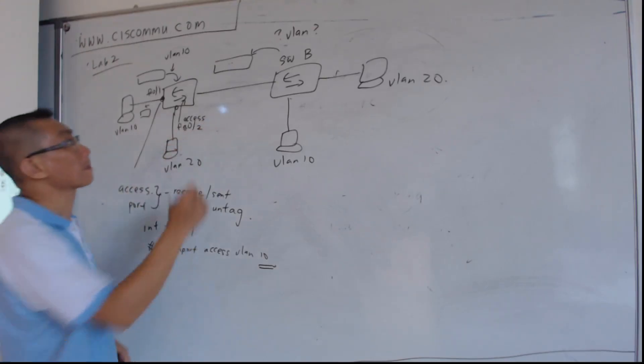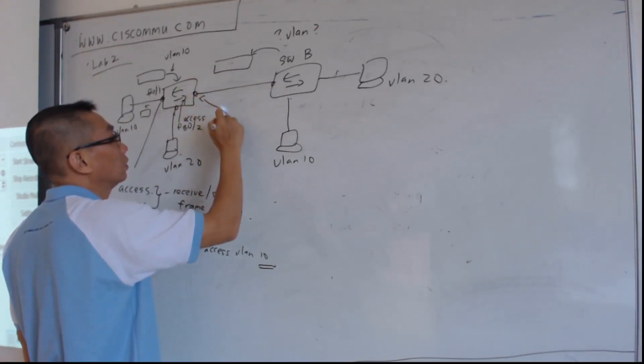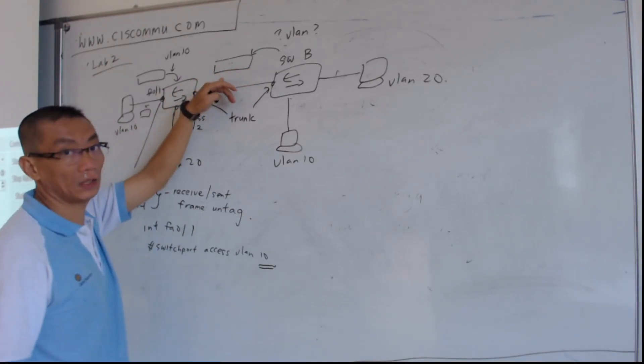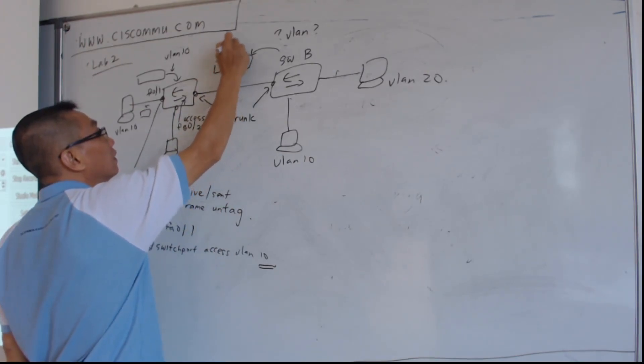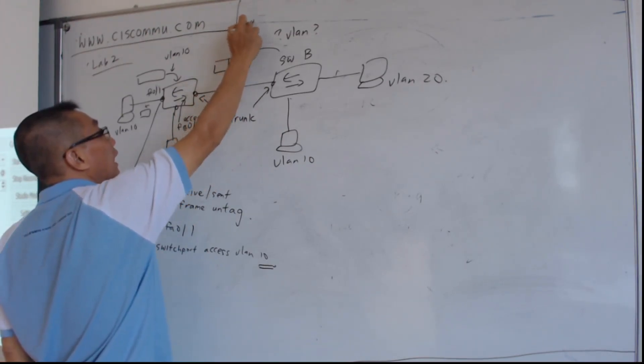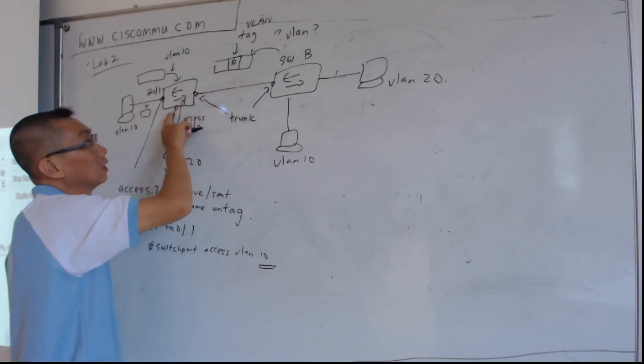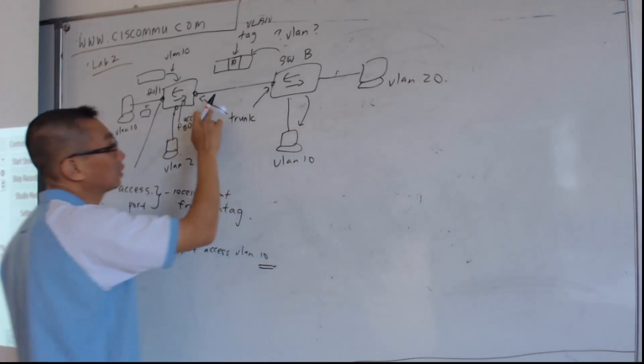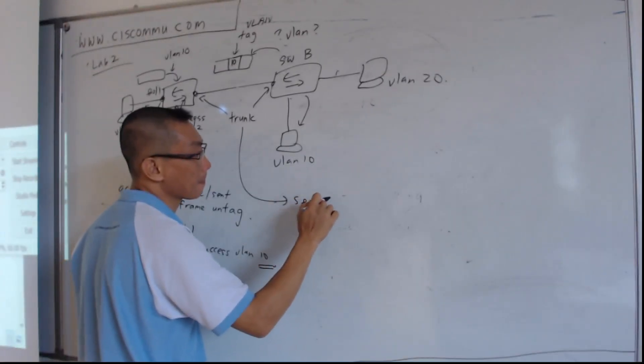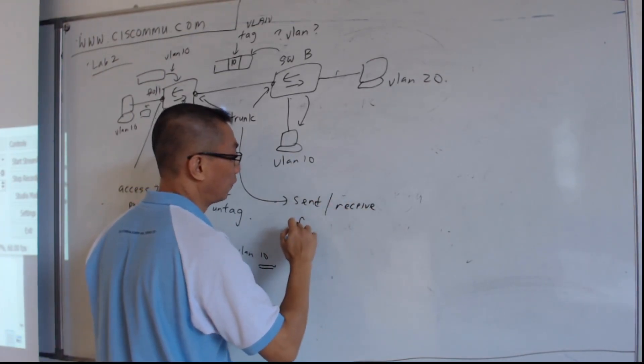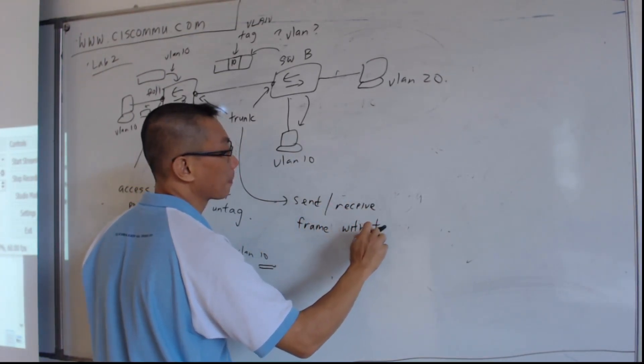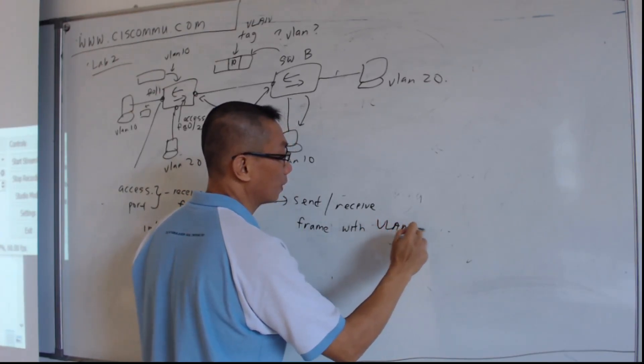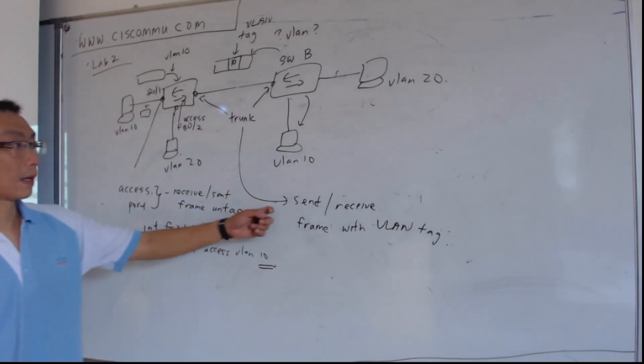If it's going out from here, it must be coming from port 10. So whenever you have an access port, you will receive and send frame untagged. Once it reaches here, this port is connecting switch to switch. So this one will be a trunk port. So whichever packet coming from here, how do we know that it's VLAN 10 or VLAN 20? We're going to add a tag here, a VLAN tag on each frame. So whenever it reaches B, it knows to give to this PC. On the trunk port, what it means is that you will send and receive frame with tag, with a VLAN tag. That's the meaning of trunk port.